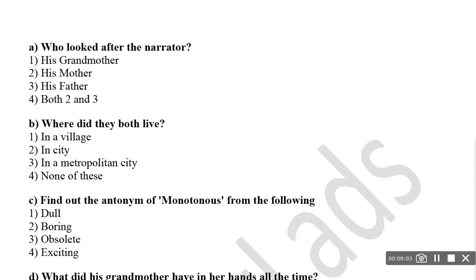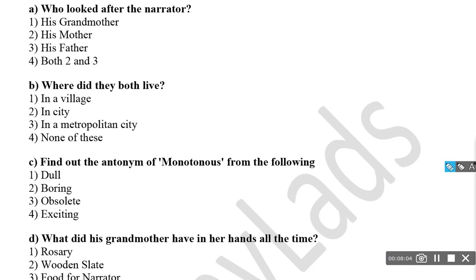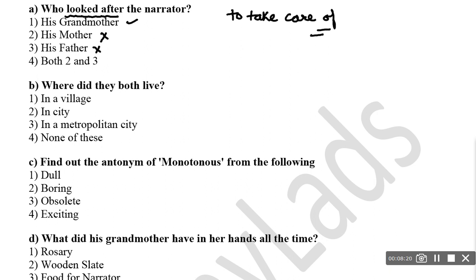On the basis of this extract, some questions: Who looked after the narrator? 'Looked after' is a phrasal verb meaning 'to take care of'. His grandmother took care of him — not his mother, not his father. Where did they both live? They lived in a village, not in a city or metropolitan city. The right option is 'in a village', since they were later shifted to the city.